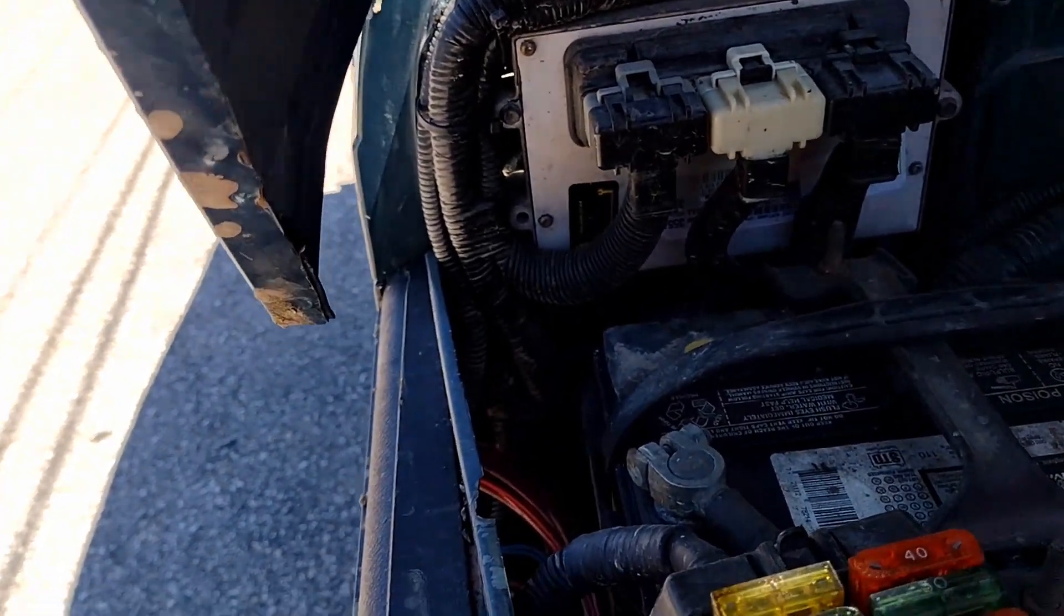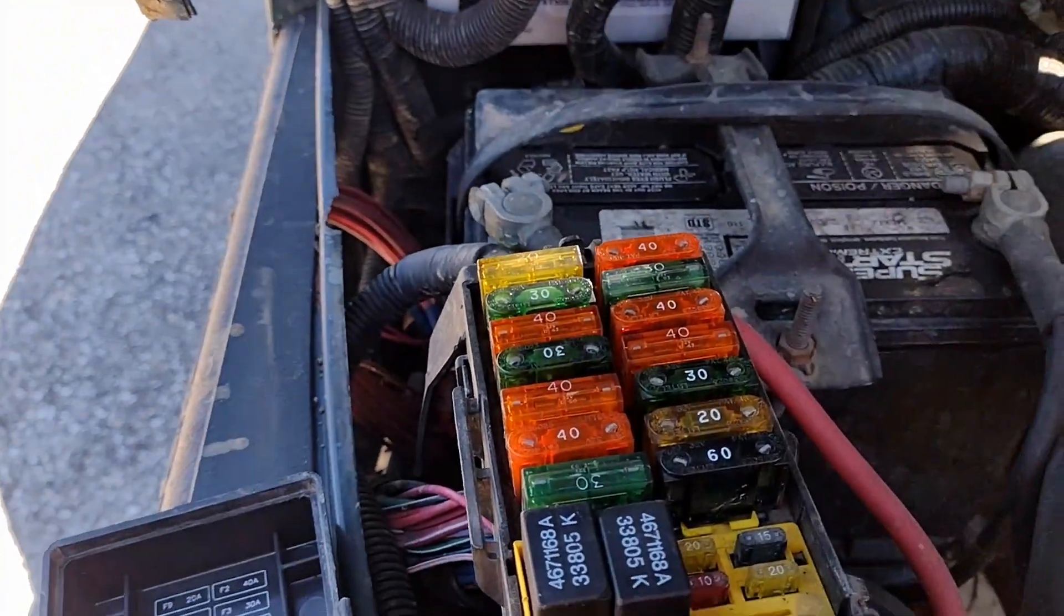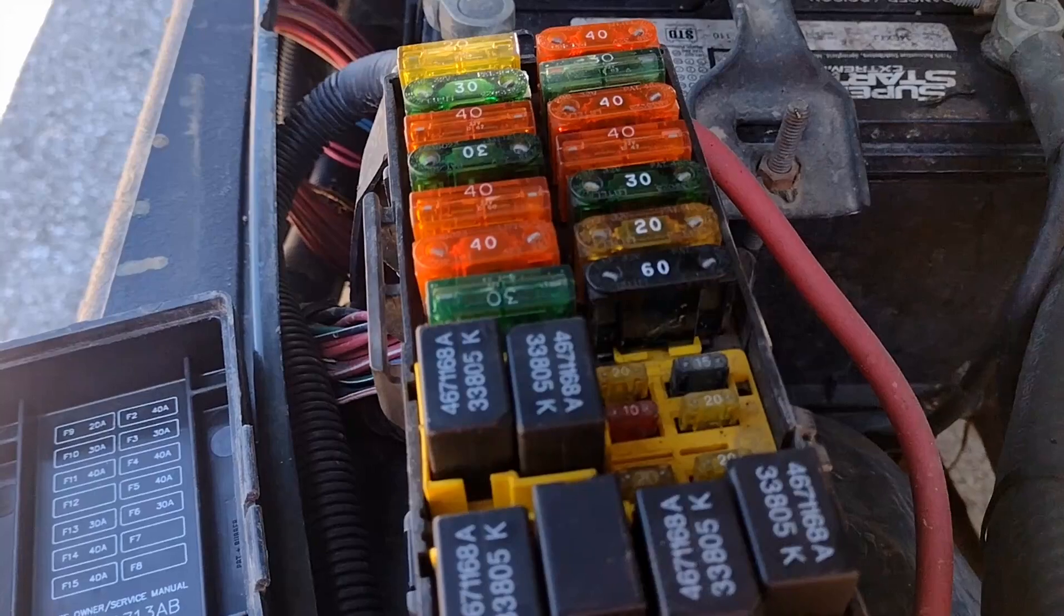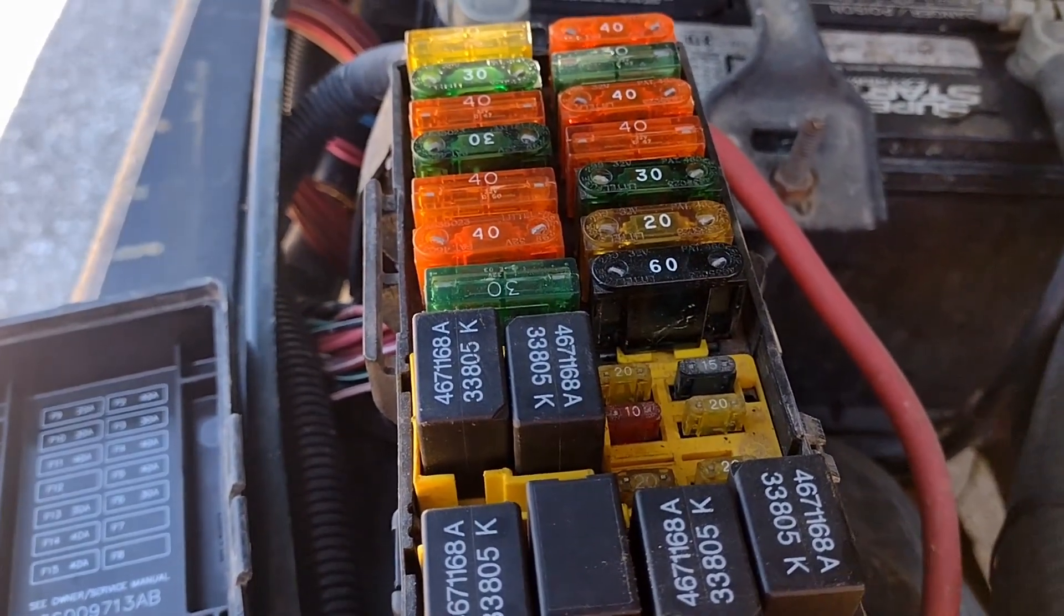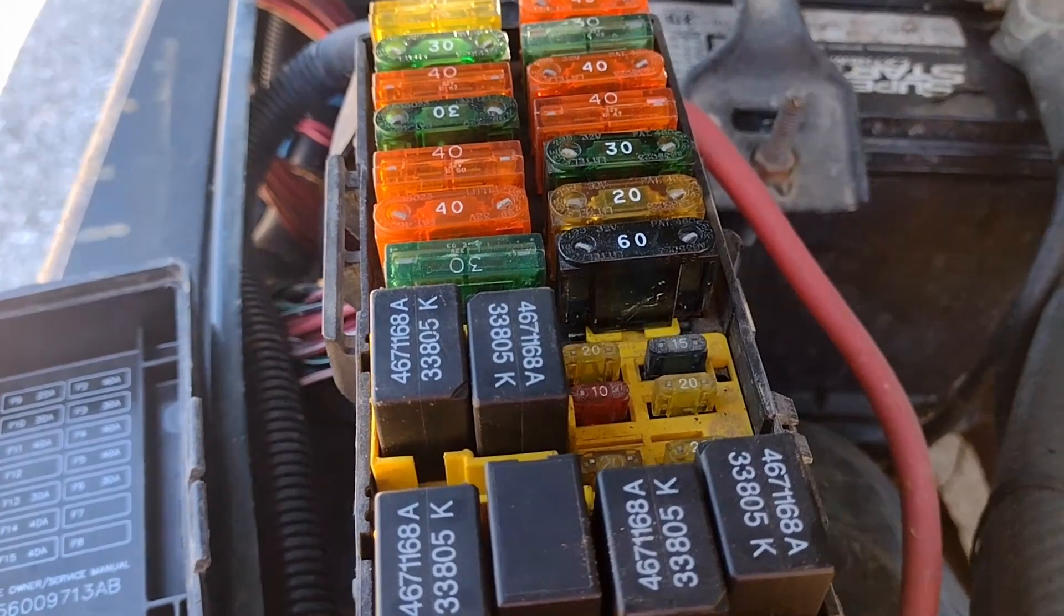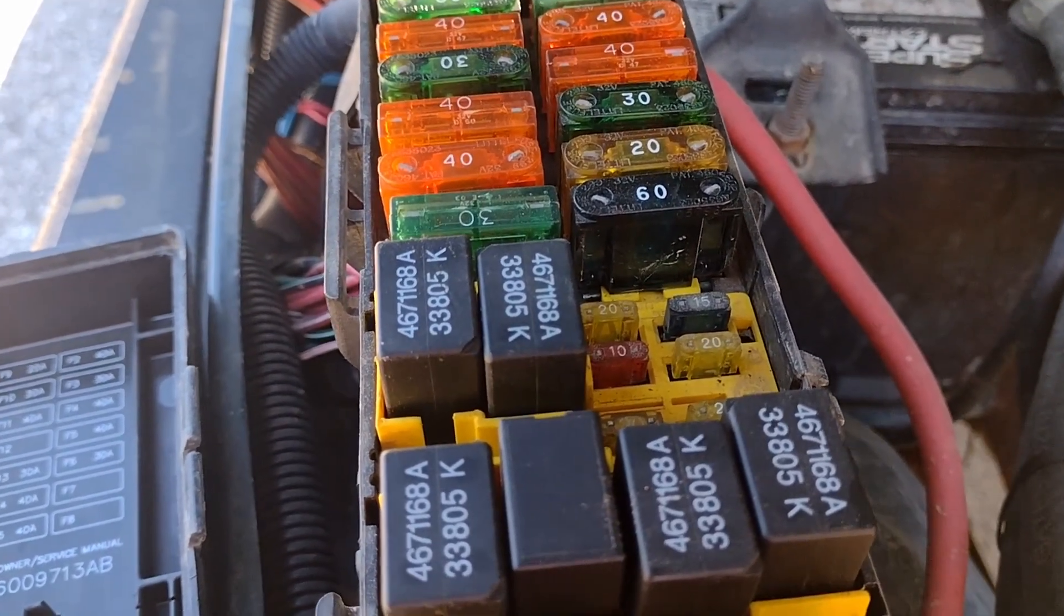Your pin 30, which is your constant hot, and your 87 pin, which is your switched output, that switched output is going to be a dark green wire with an orange stripe.